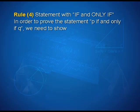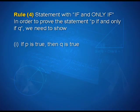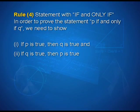Rule 4 is statements with 'if and only if'. In order to prove the statement 'p if and only if q', we need to show: first, if p is true then q is true; and second, if q is true then p is true.